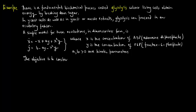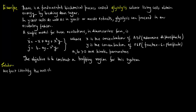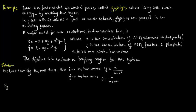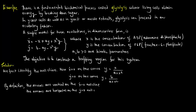The objective is to construct a trapping region for this particular system. We will work towards its solution. We first identify the nullclines. x-dot equals 0 on the curve yields y equals (x + x²y - ... resolved by substitution), and y-dot equals 0 yields y equals B divided by (A plus x²). By definition, the arrows are vertical on the x-dot equals 0 nullcline and horizontal on the y-dot equals 0 nullcline. The direction of flow is determined by the signs of x-dot and y-dot.